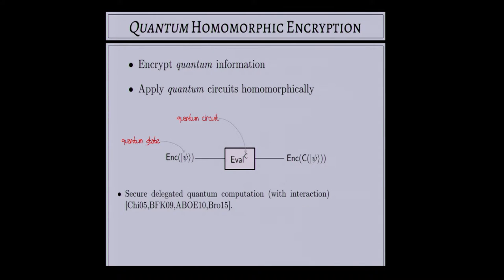The idea of secure delegated quantum computation has already received a lot of attention because it really makes a lot of sense. When we finally realize full-scale universal quantum computers, they're probably going to have to be kept in a lab somewhere — kept super cold. You're not going to have one in your home or business, so you'll have to outsource your quantum computations. Quantum homomorphic encryption would provide a way of delegating your quantum computations securely without the requirement for interaction.